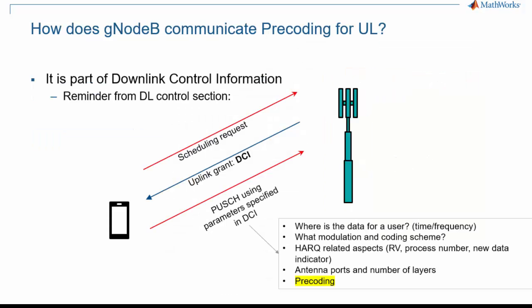We have seen how CSI reports are sent back to the gNodeB by the UE. Correspondingly, for the uplink direction, information resulting from SRS reception at the gNodeB can result in scheduling decisions as well as beamforming selection for the uplink. As you may remember from the 5G Explained episode about Downlink Control Information, or DCI, uplink precoding is one of the pieces of information communicated to the UE via DCI. This information is part of the uplink grant, which comes as a response to a scheduling request from the UE.